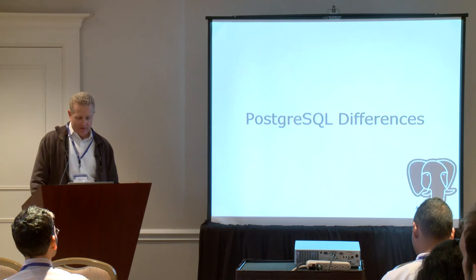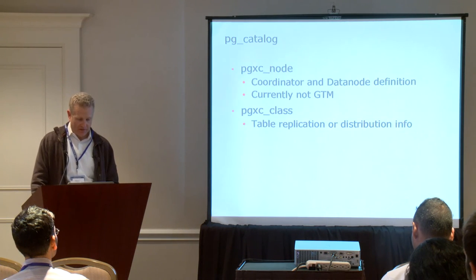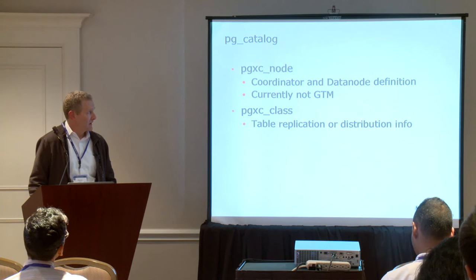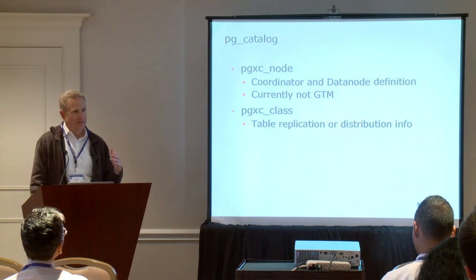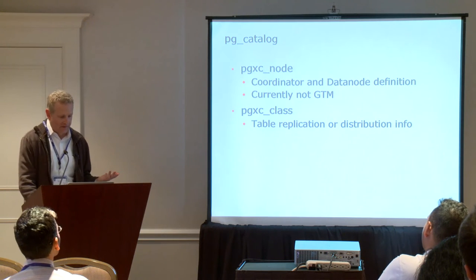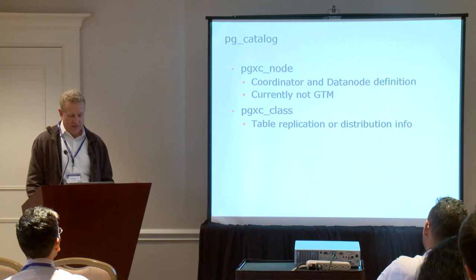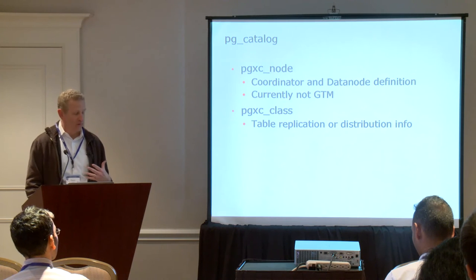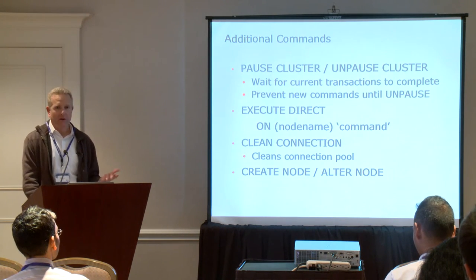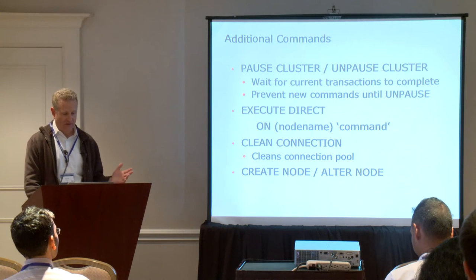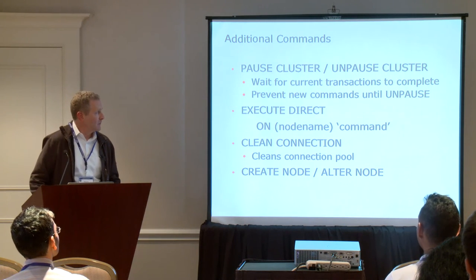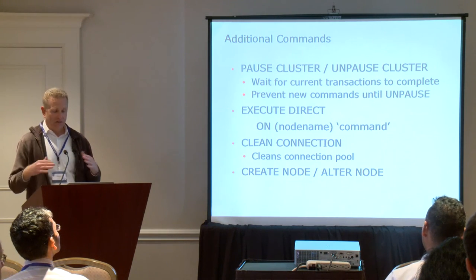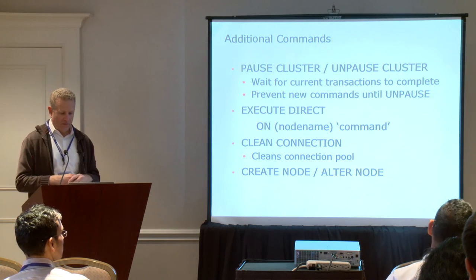Some differences of Postgres XL to Postgres itself: we've made some modifications to the catalog. There's a new table, PGXC_NODE, which contains information about coordinators and data nodes and how they're defined. There's also PGXC_CLASS — instead of it being in PG_CLASS, here we store table replication or distribution information. We've also added a variety of commands to help manage the cluster, for example pause and unpause cluster. If you do that, it'll try to wait for currently executing transactions to finish and block any new activity from occurring.